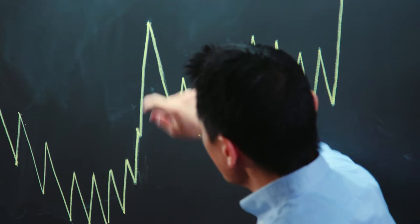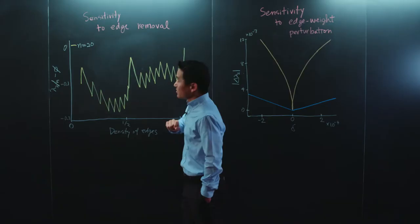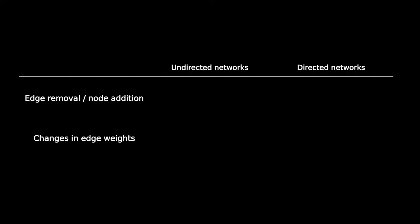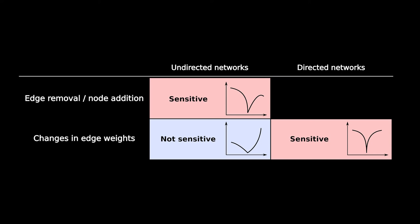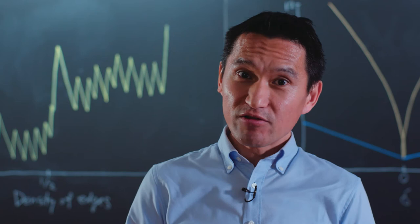Likewise, we can determine whether a network is at a cusp or away from it in this case. Whether a system exhibits sensitive dependence on network structure depends on the class of network, the type of perturbation, and the dynamical process. For processes governed by the algebraic connectivity, undirected networks are sensitive to edge removal and node addition, but not to edge weight perturbation. Whereas, directed networks are sensitive to edge weight perturbation, but not to changes in the number of nodes or edges.